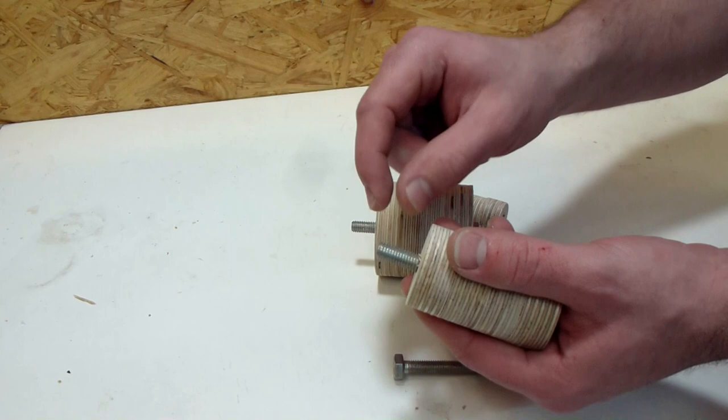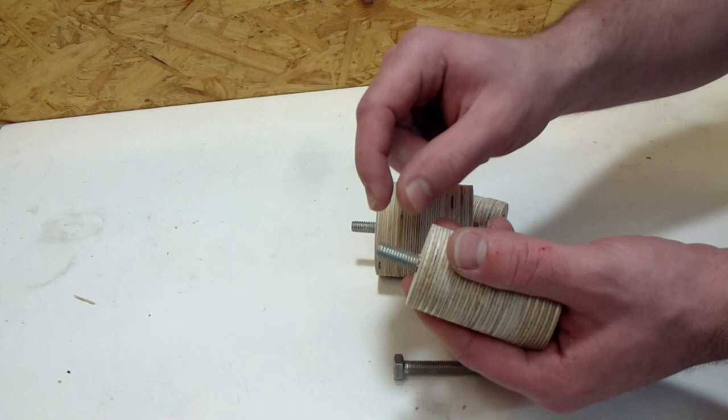The hole needs to be centered so I use a drill bit to center the disc and clamp everything down. Then without moving anything I switch to the Forstner bit and drill the hole.